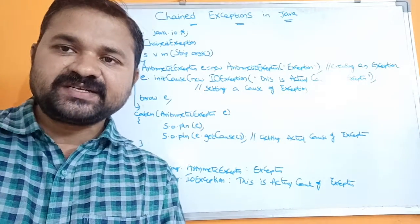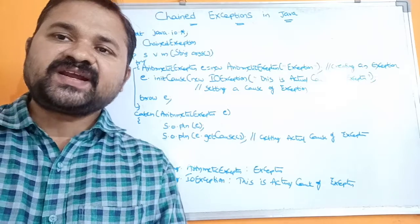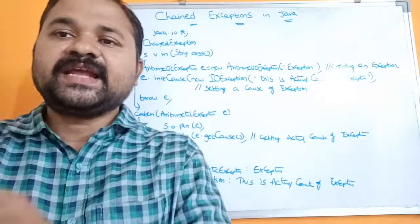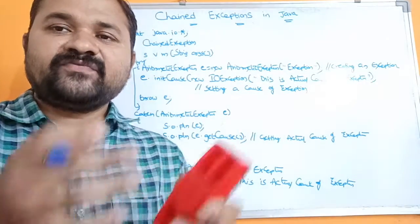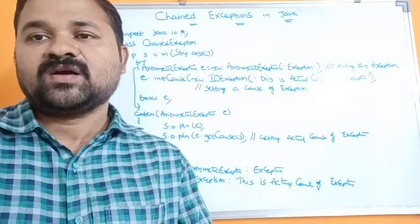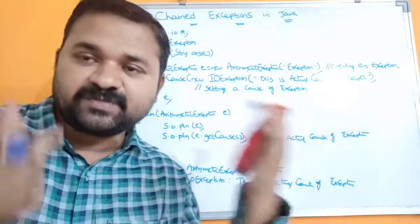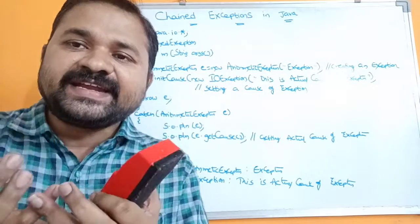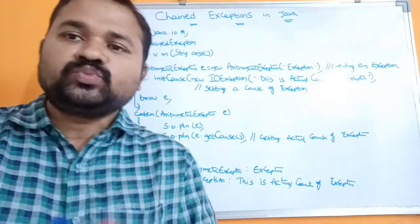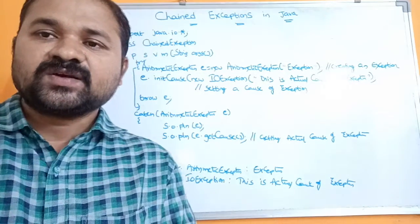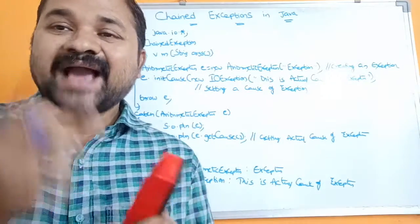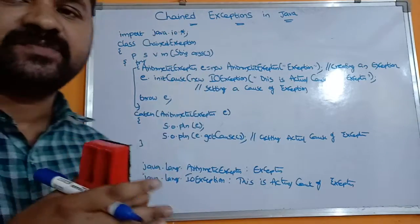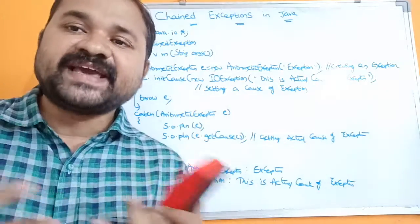Let's see about chained exceptions in Java. Generally whenever we get an exception, we simply display that exception's message, but we do not display why that exception occurred — what the actual reason is. Chained exception means whenever we get an exception, in addition to displaying that exception's information message, we also display the actual reason behind why we got that exception. That is nothing but chained exception.